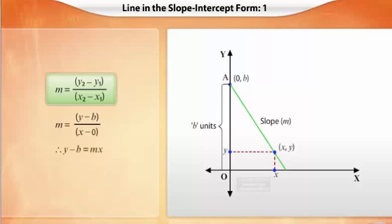By regrouping the terms, we get y is equal to mx plus b. This equation is the slope-intercept form of the line, where m is the slope and b is the y-intercept of the line.